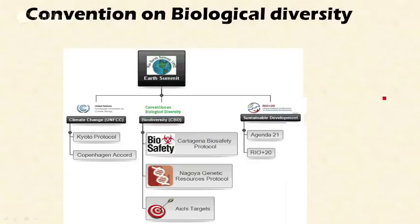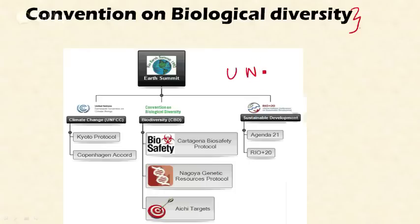In this video, let's discuss the Convention on Biological Diversity. This is the most important convention for the protection of biodiversity throughout the world. This convention was opened for signing during the Rio Earth Summit, that is the United Nations Conference on Environment and Development (UNCED).